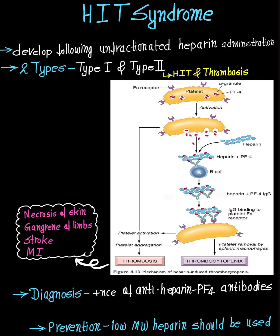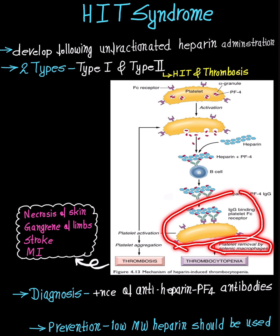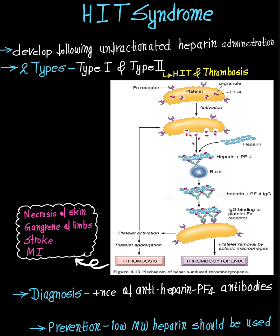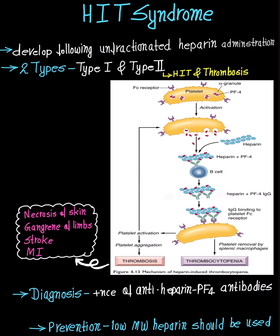Such platelets are removed by splenic macrophages, leading to thrombocytopenia, and the binding also causes platelet activation. Due to platelet activation, there will be more and more release of platelet factor 4, and platelet aggregation will lead to thrombosis.